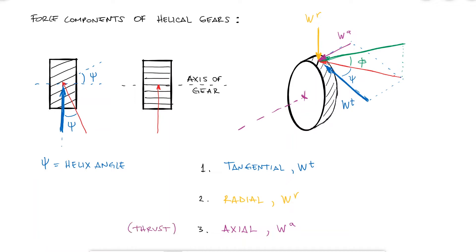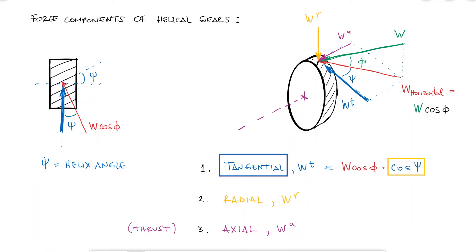The horizontal component of the main force vector that we can obtain by multiplying it by the cosine of the pressure angle can be further decomposed into the tangential and axial components by using the helix angle. The adjacent side, and therefore the component using the cosine for the tangential component.